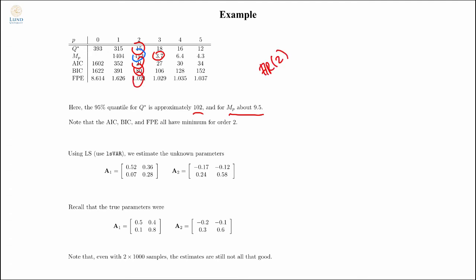If I use least squares to estimate the unknown parameters, there's a function lsvar you can call, this is the estimate I will get. Notice that this is not all that close to the true parameters, even though I had 2x1000 measurements, showing you that this is quite difficult to estimate these parameters accurately as soon as you hit multivariate processes like this.